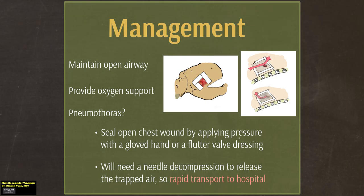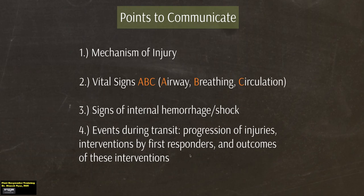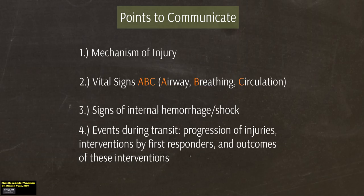With patients who have an open chest wound and possibly a sucking sound due to penetrating trauma, they will likely need needle decompression to release the trapped air, and rapid transport to the hospital is crucial. Important points to communicate include the mechanism of injury, vital signs, ABCs — airway, breathing, and circulation — any signs of internal hemorrhage or shock, and the events that have occurred during transit, such as progression of injuries, any interventions by the first responders, and the outcomes of these interventions.